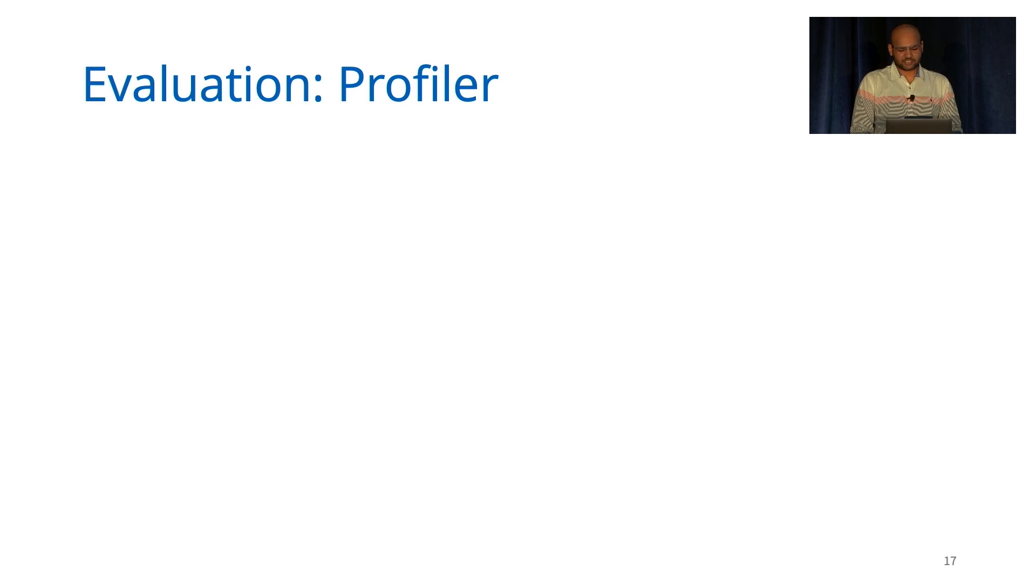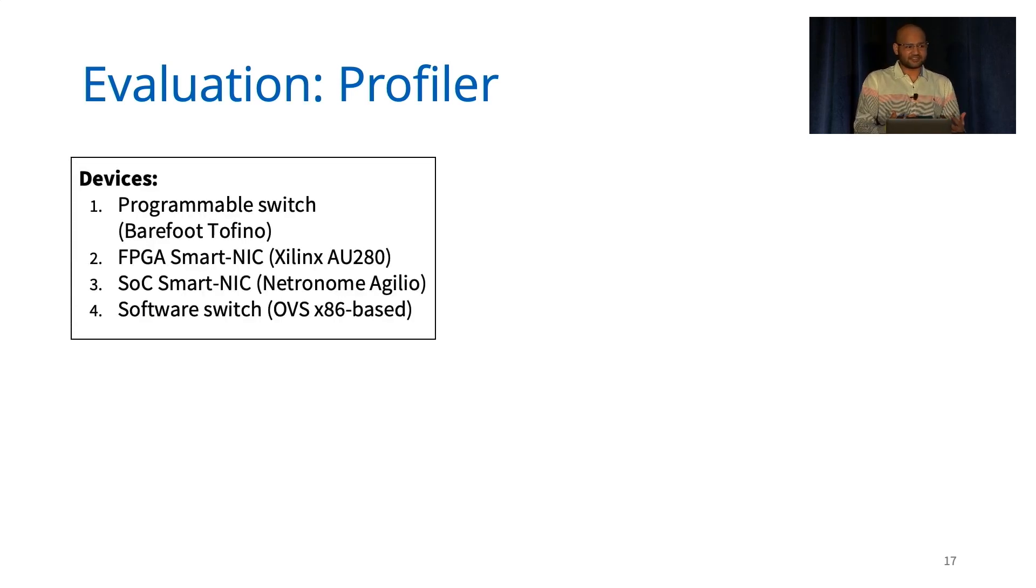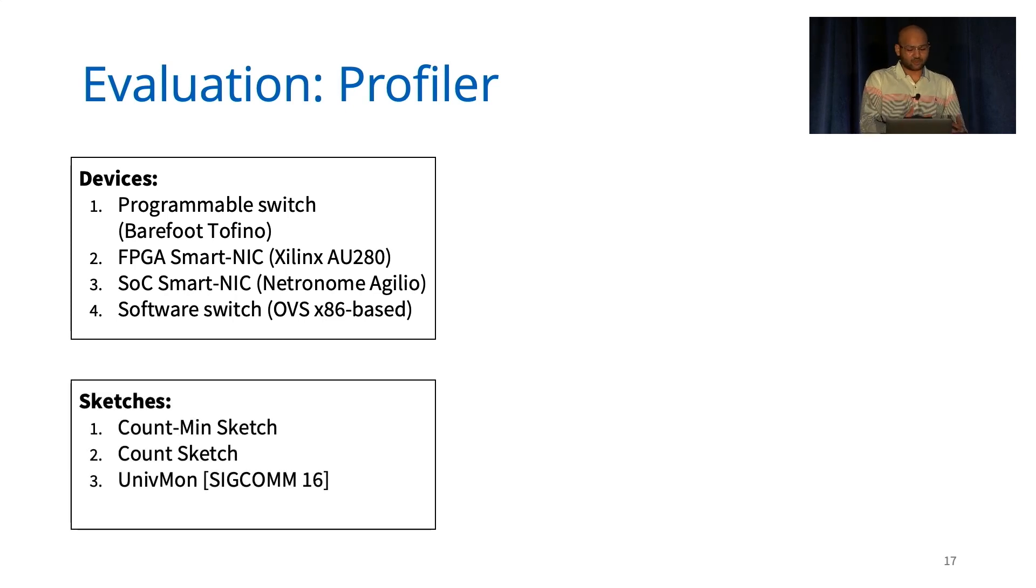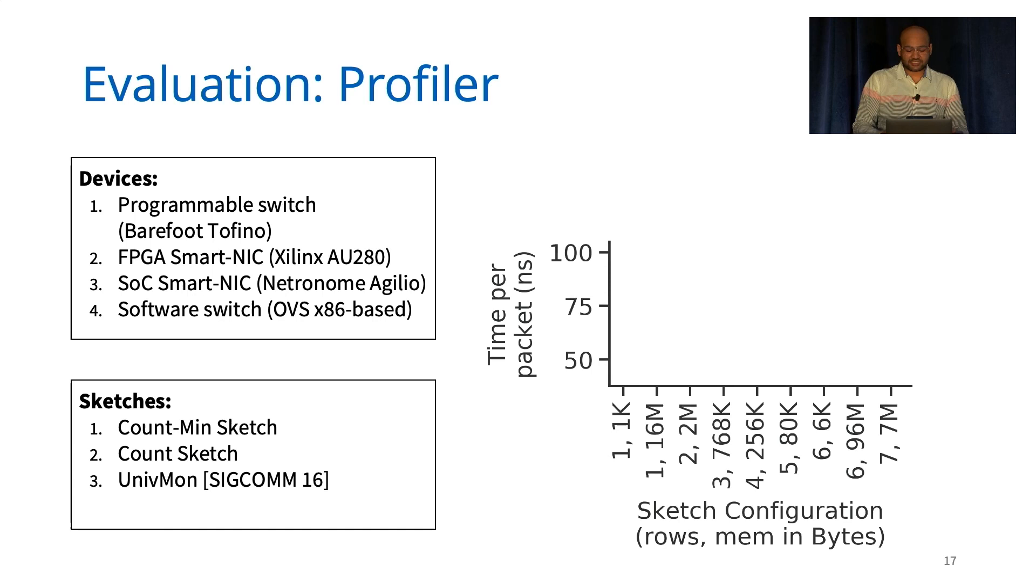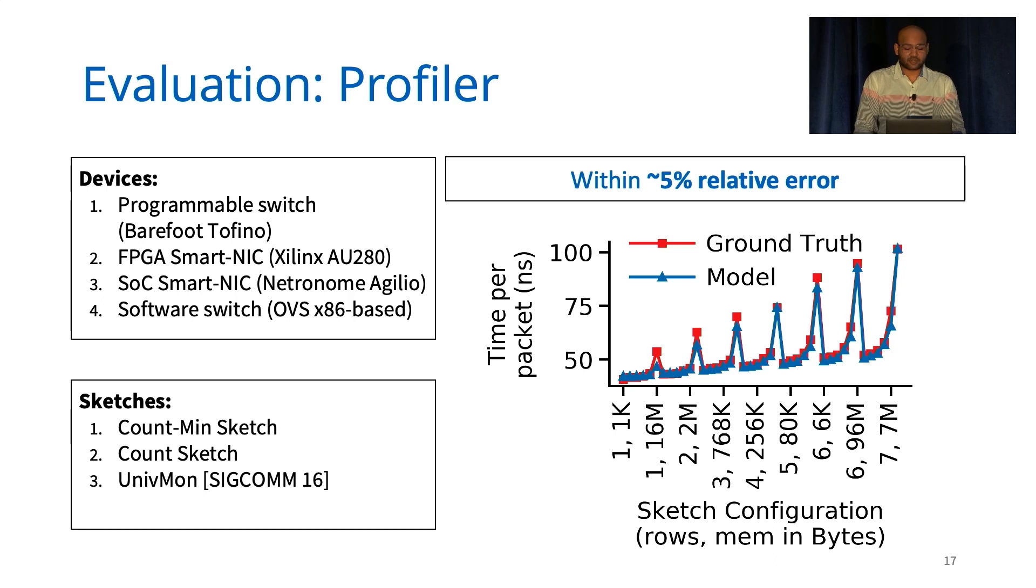Now let's move on to our evaluation, starting with the profiler. We consider a set of devices that are available to us, including a programmable switch, FPGA NIC, system-on-chip based NIC, and a software switch. We port a number of sketches to all of these devices. And for each device as shown in the figure, we run a number of different configurations. We compare the ground truth performance with that predicted by the profiler. We find that our automated profiler predicts sketching performance within 5% relative errors on average.